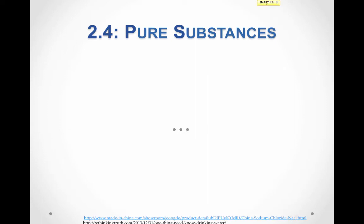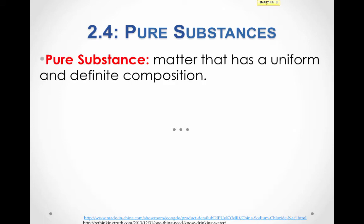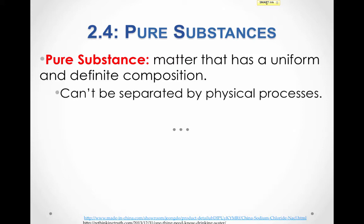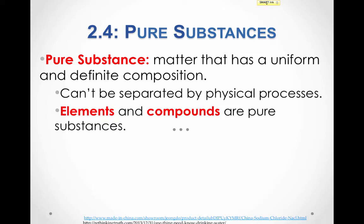There are two major categories of matter: mixtures and pure substances. A pure substance is matter that has a uniform and definite composition. It cannot be separated by a physical process — only a chemical process can separate pure substances. Elements and compounds are examples of pure substances.